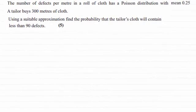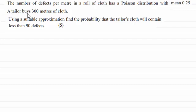Hi there. Now for this part of the question, just to recap: we were originally told that the number of defects per metre in a roll of cloth has a Poisson distribution with a mean of 0.25. And now we're given that a tailor buys 300 metres of cloth. Using a suitable approximation, find the probability that the tailor's cloth will contain less than 90 defects — for five marks.